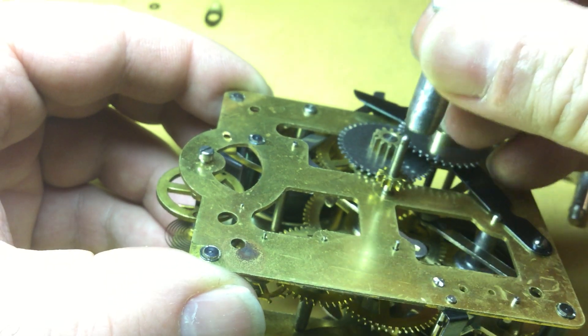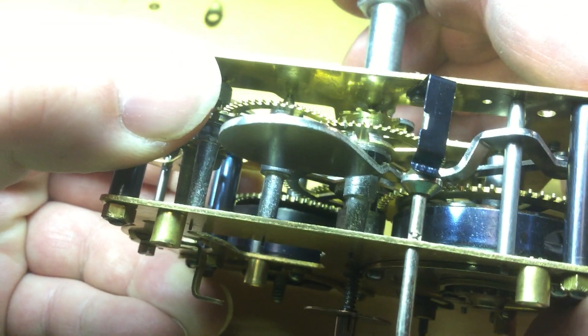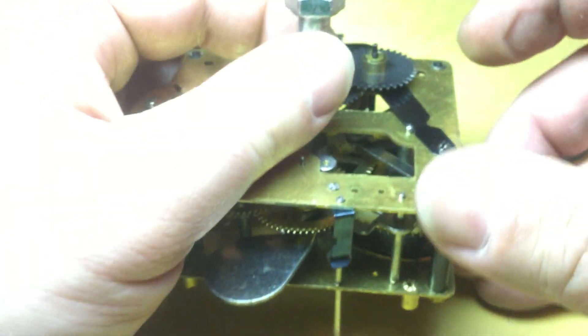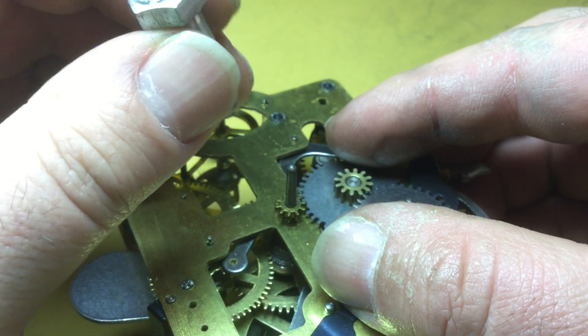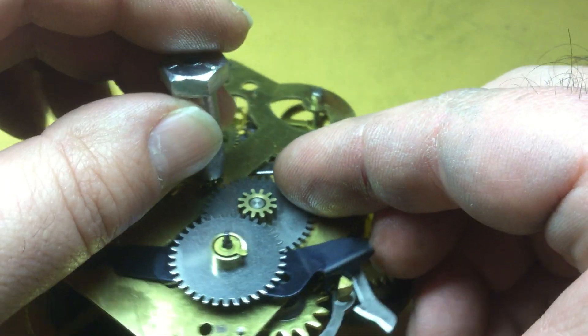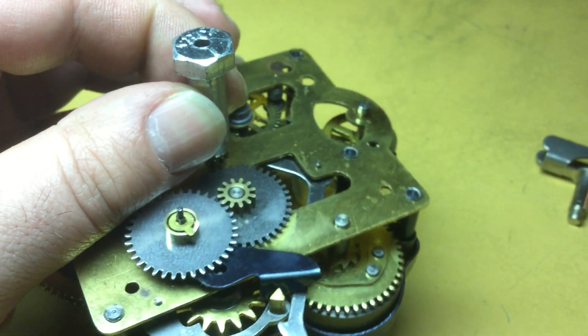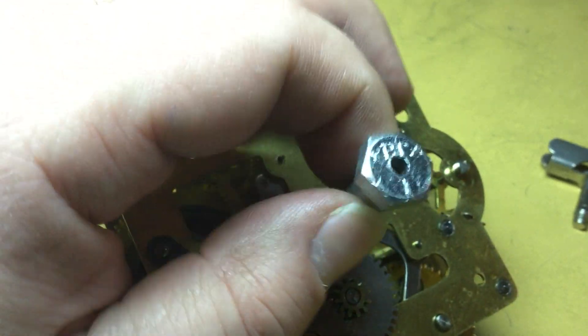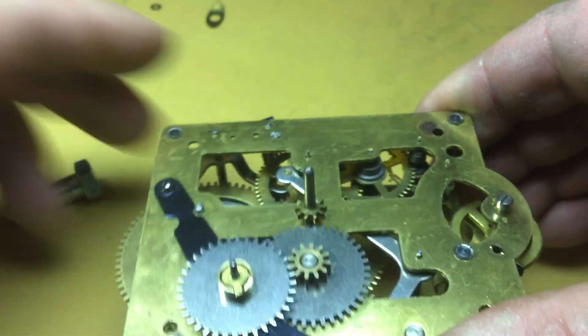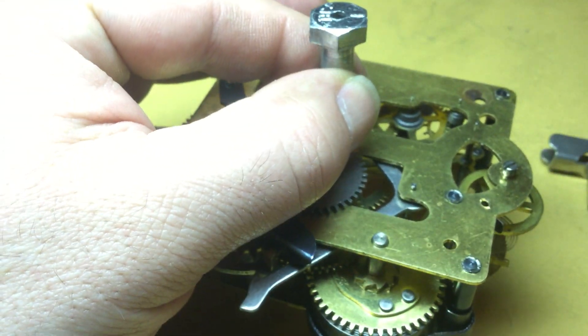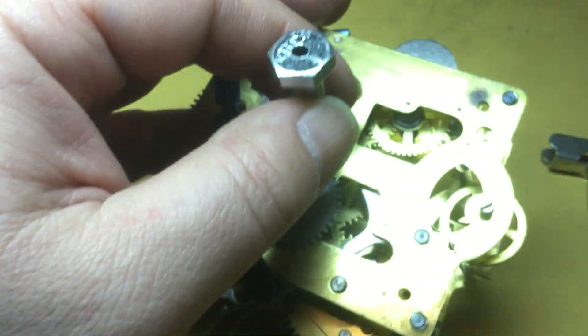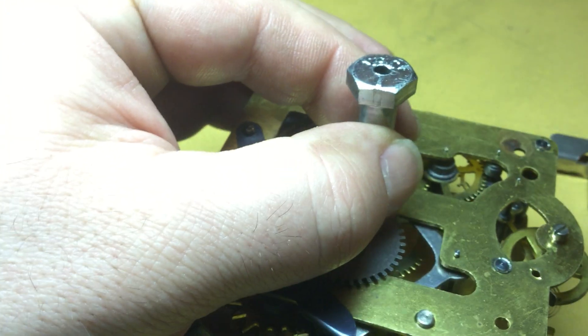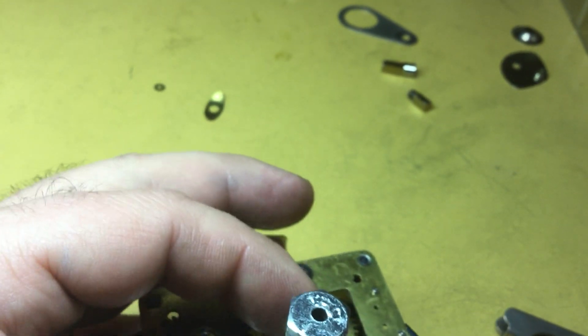And I made this out of a bolt. This is a little tool I made for pushing the shuck pinion into place. But, honestly, you're going to have to use a hammer for this. And make sure that the minute wheel there isn't going to get pinched. And just hold things there and just lightly tap it a little bit at a time.